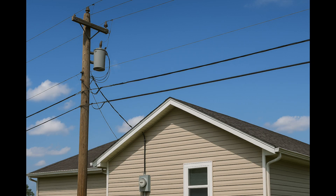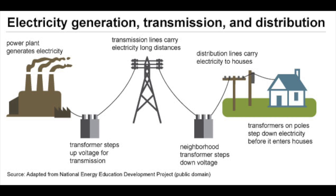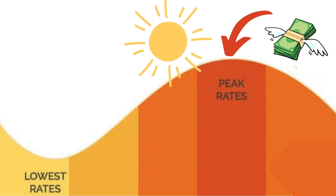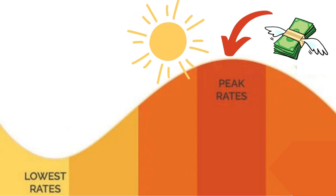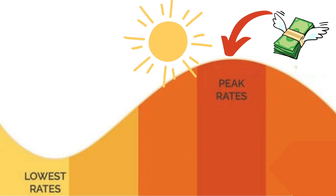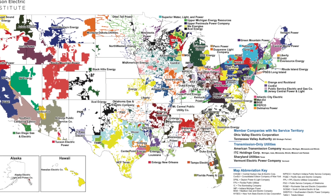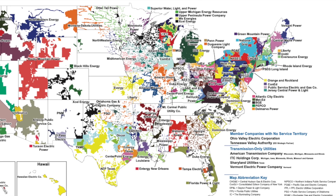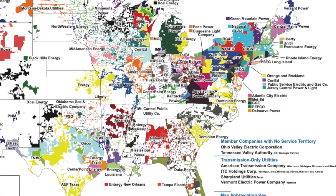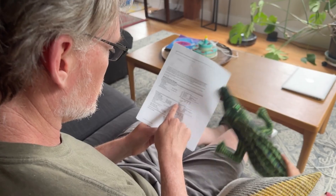What are time-of-use rates? Those are agreements with your utility to pay for electricity at a different price depending on the time of day. Prices are sometimes high when there's peak demand, like in the late afternoon, or really low, like in the middle of the night. Over 60% of U.S. households have access to time-of-use rates with their utility, but less than 10% of people are actually using them.